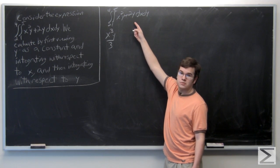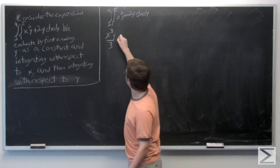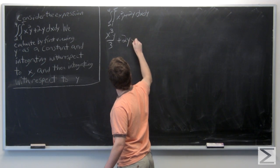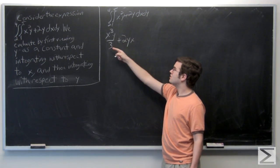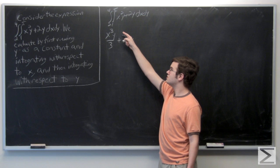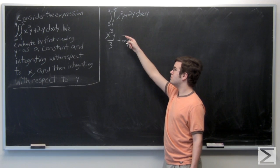Plus 2y, which when integrated with respect to x is just 2yx. Since it's the inner integral, we're evaluating this whole expression from 1 to 5.